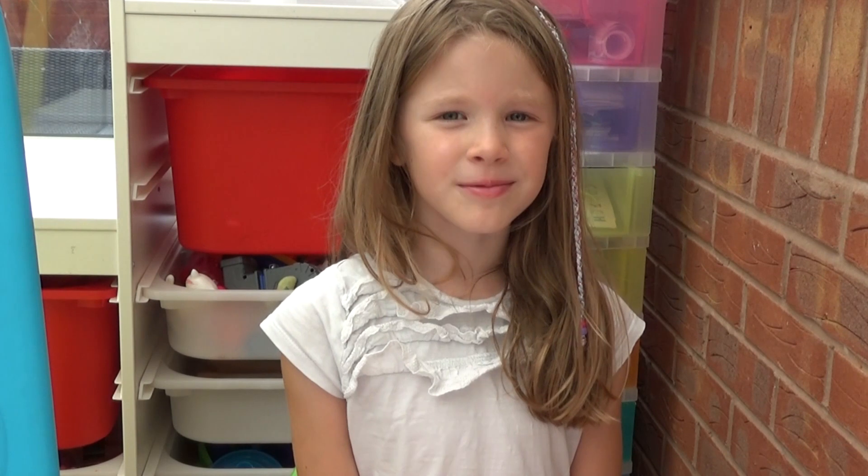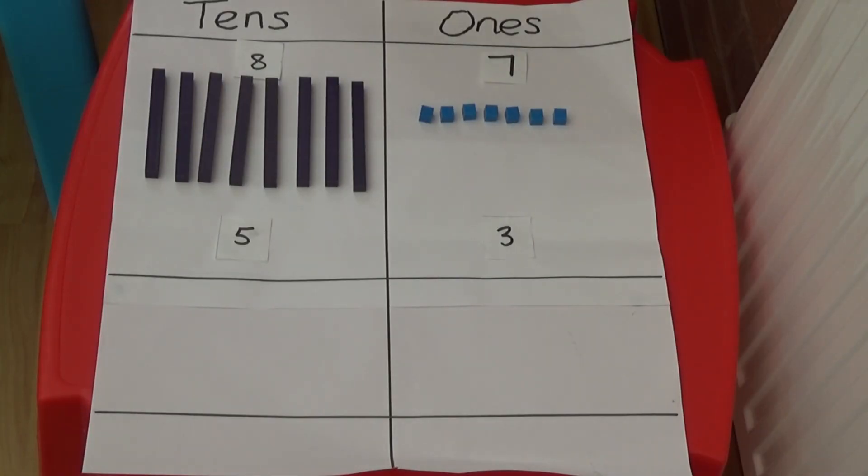When we do column subtraction we always start by subtracting the ones first. I'm going to start by subtracting the 3 ones from the 7 ones. I need to remove 3 cubes and bring the rest down into the answer box.